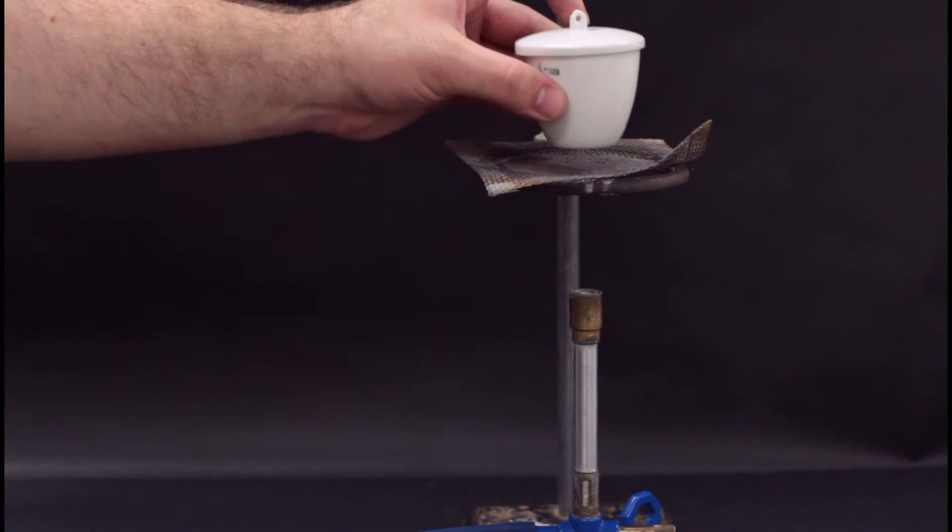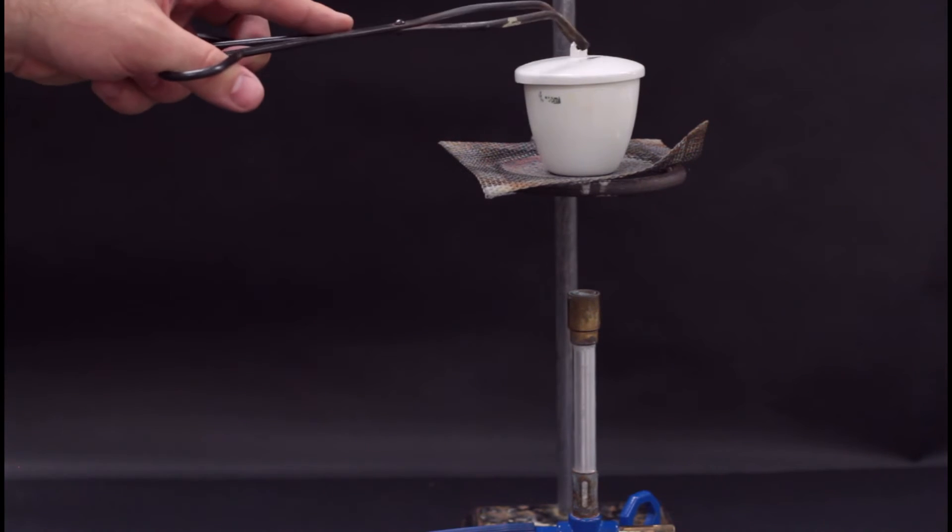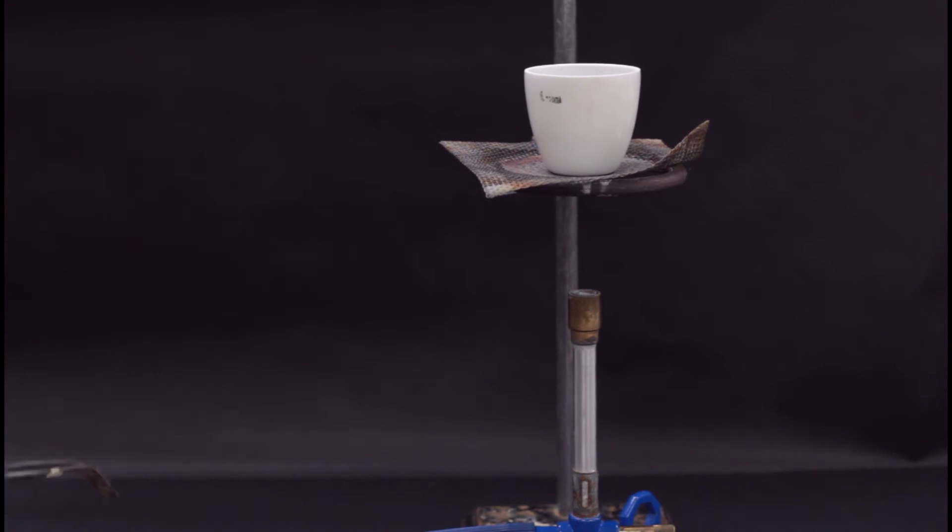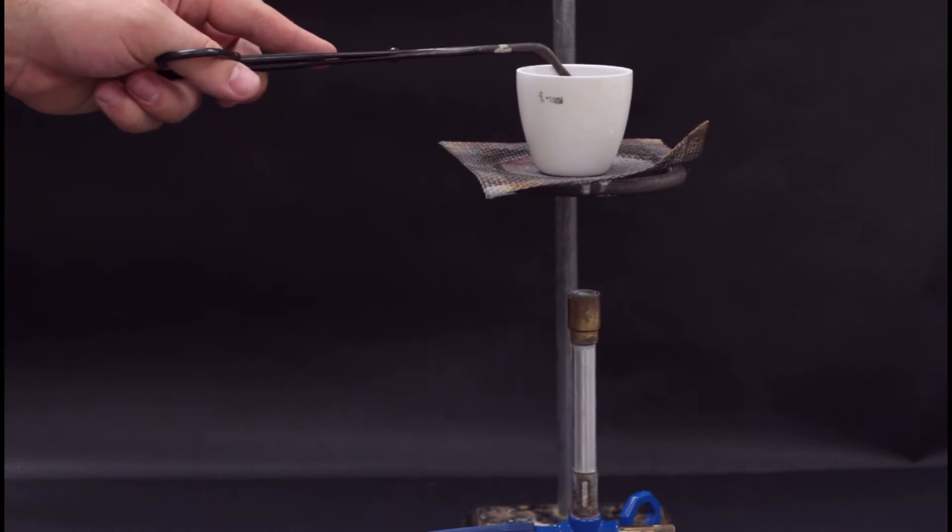Set up the ring stand and the Bunsen burner and place the crucible on the ceramic. Practice using the tongs to remove the lid and move the crucible around, because once we start you won't be able to touch it directly because it'll be really hot.